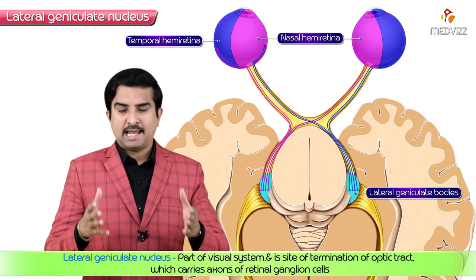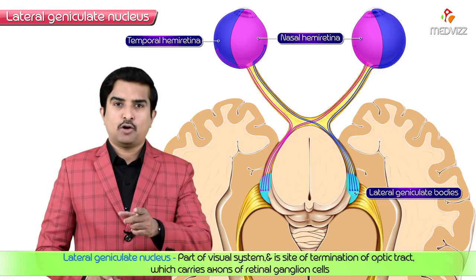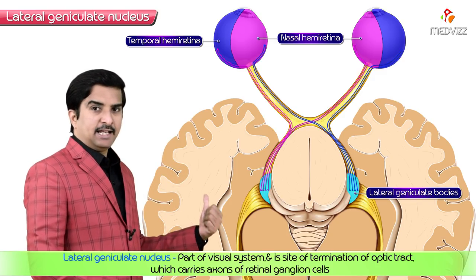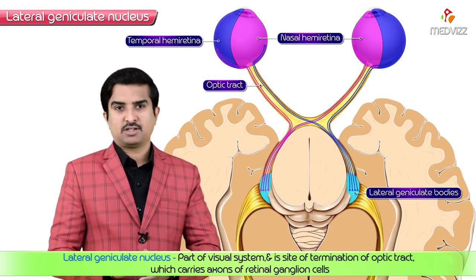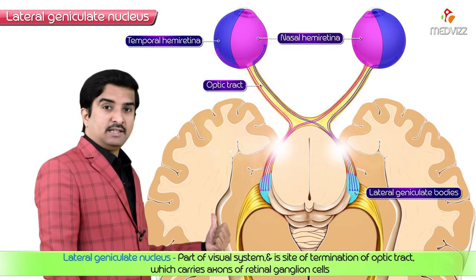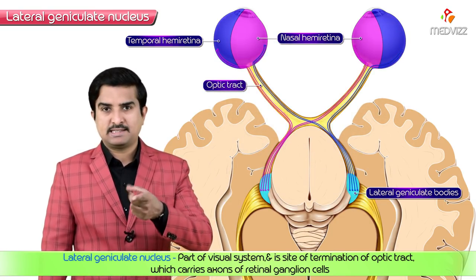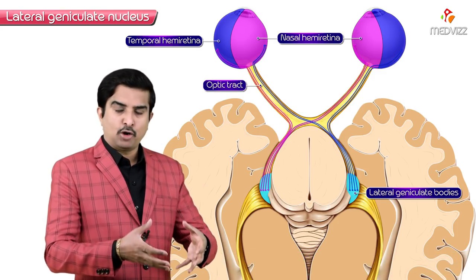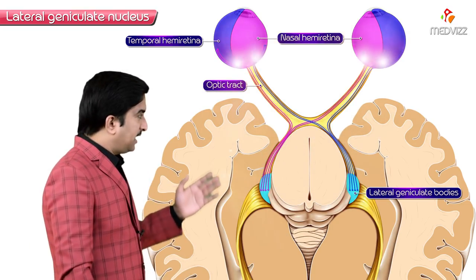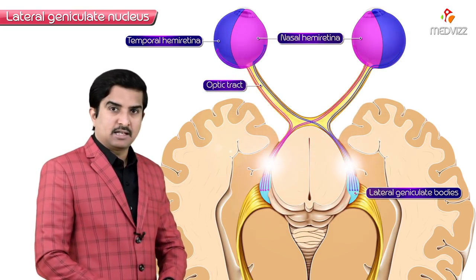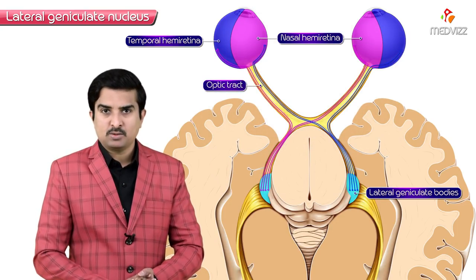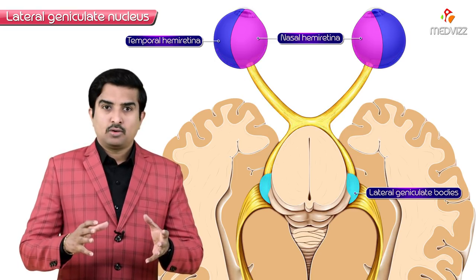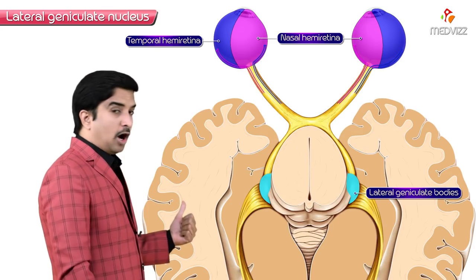The lateral geniculate nucleus, or lateral geniculate body, is part of the visual system or visual pathway. It is the site of termination of the optic tract, which carries the axons of the retinal ganglionic cells. The retinal ganglionic cell axons terminate in the lateral geniculate nucleus, also called the lateral geniculate body.